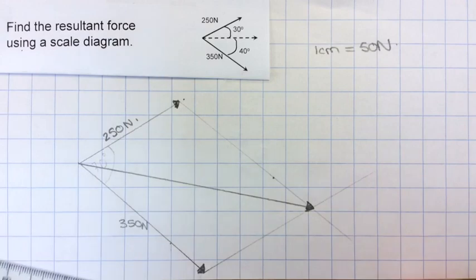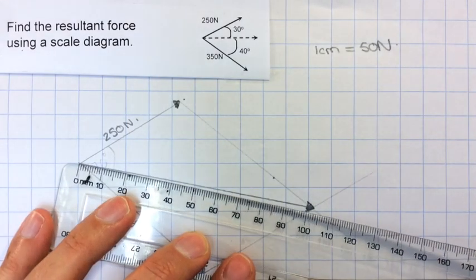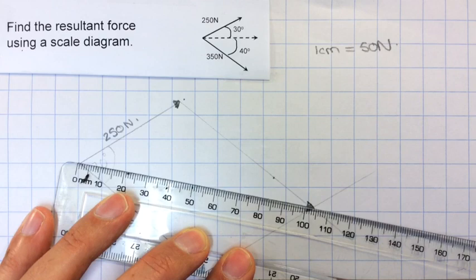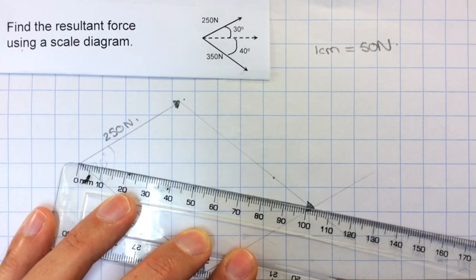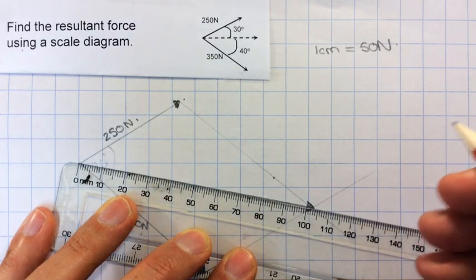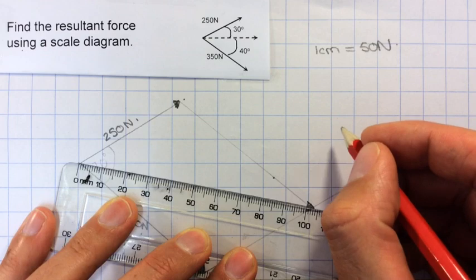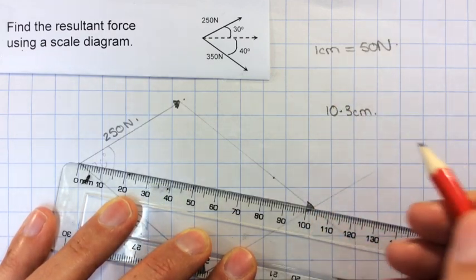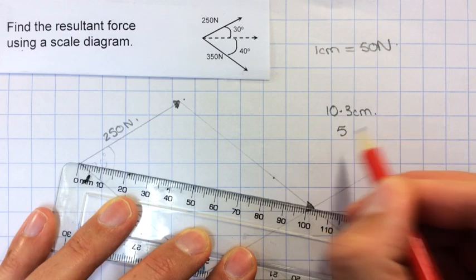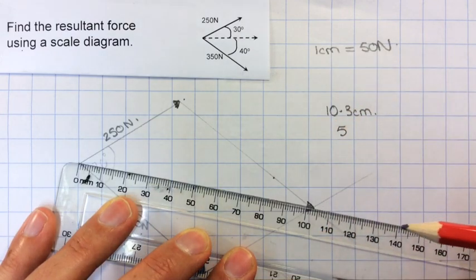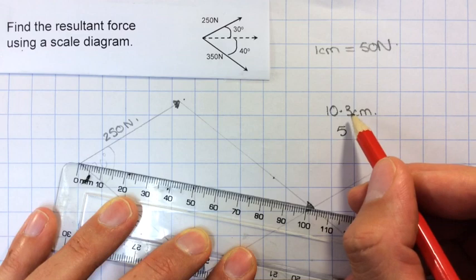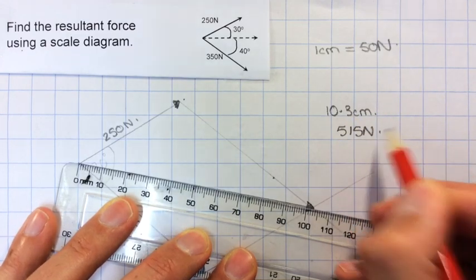And then I need to measure the length for that, which is about 10.3 centimeters. So 10.3 centimeters multiplied by 50 would give me 515 newtons.